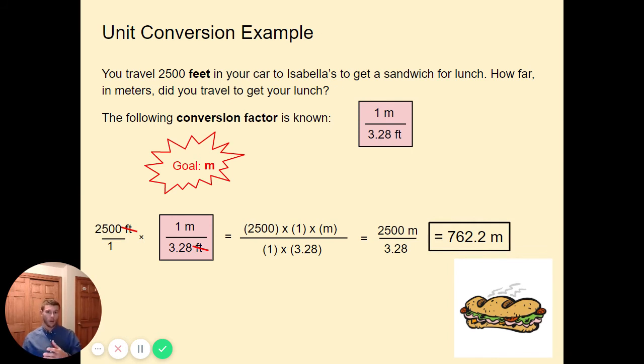We do our division and we get our final answer of 762.2 meters. And once again, we just double check with our goal. The goal is to get into meters. Our answer is in meters. So that checks out. We're good to go.